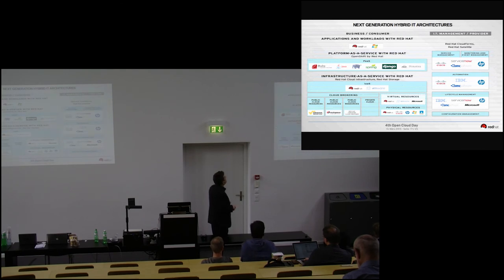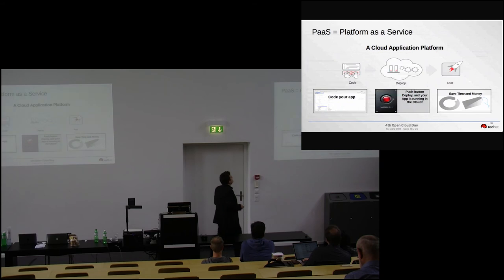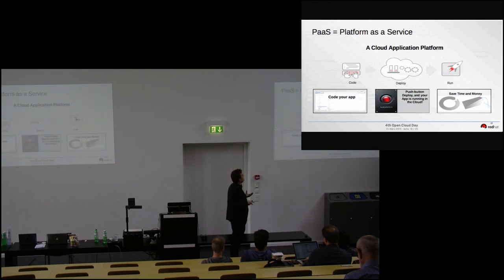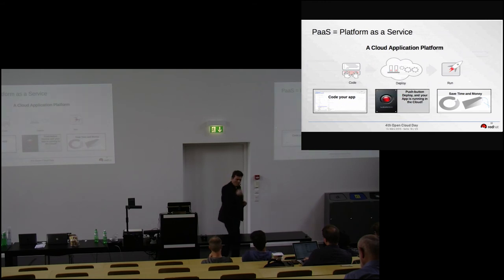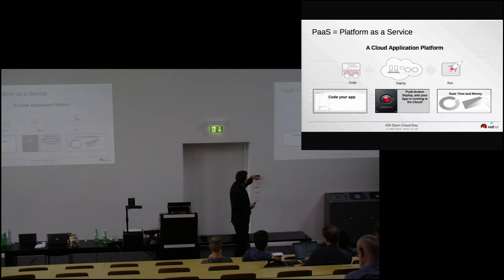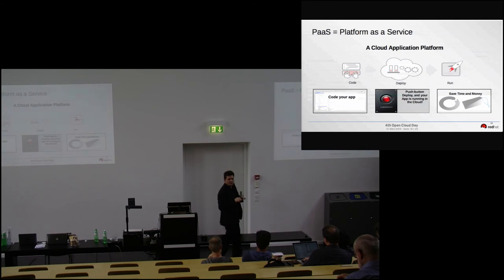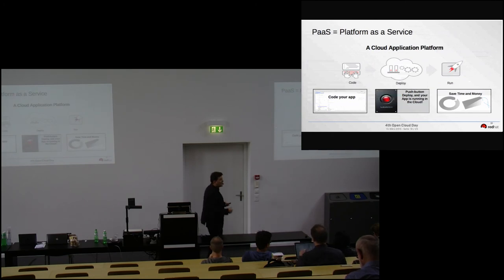OpenShift is our platform as a service for software development. We support a lot of application development languages. Developers can log into OpenShift running on-premise and say they want to do a JBoss application today — within one button press, they have a complete development environment in two minutes, with JBoss, the right Java version, Jenkins integration, Maven integration, and a Git repository. When they're ready, they can deploy to OpenStack, as a container, or as an instance.